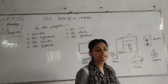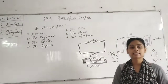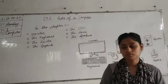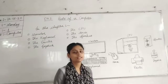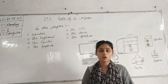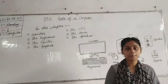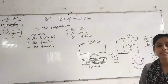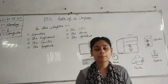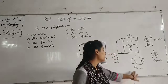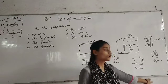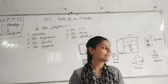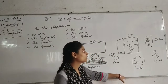Next is the printer. The printer is a device which is used to print. Printers are used to print on paper. The output from a printer is called a printout.